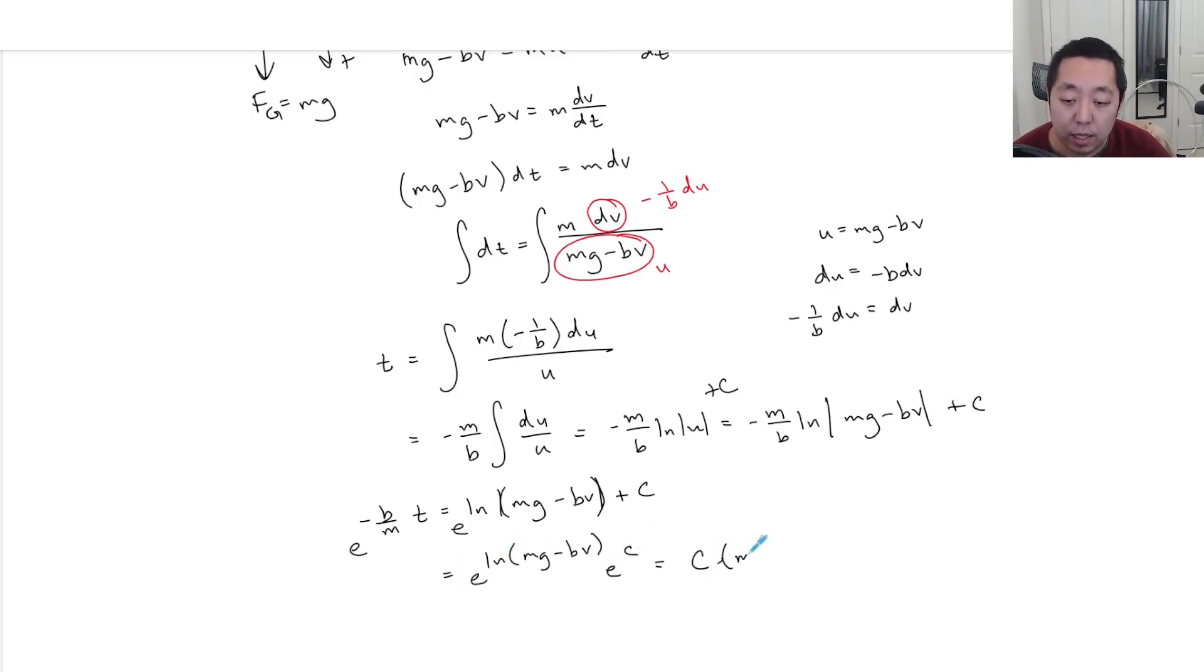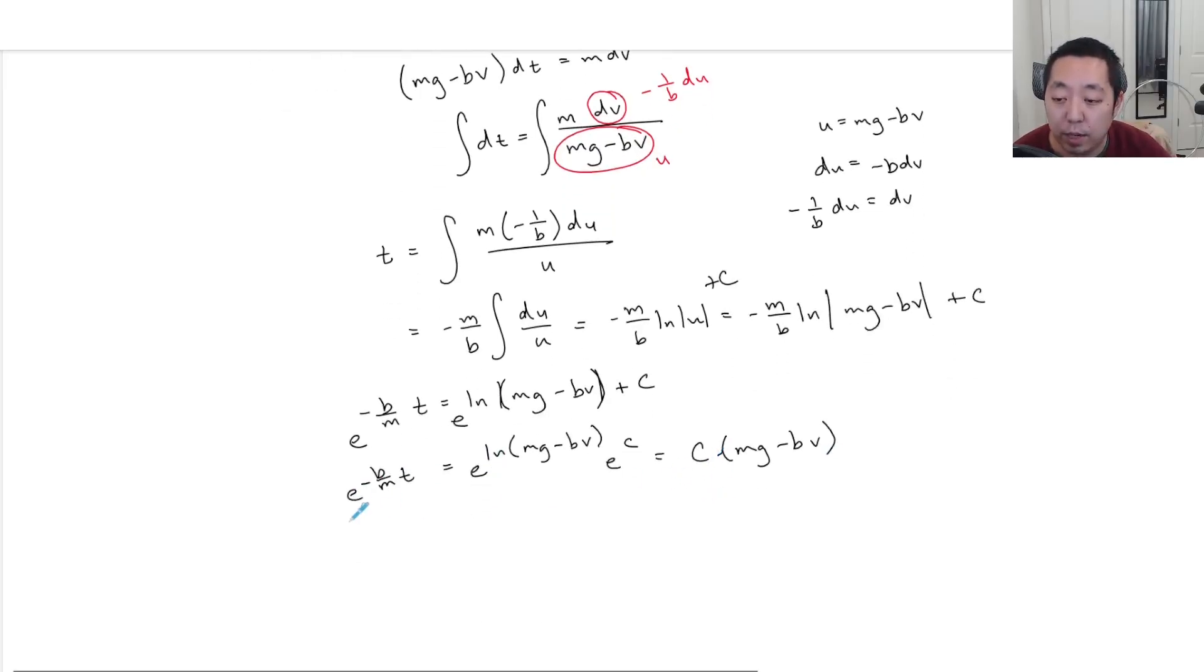And so then you could theoretically try to solve for this. I'm going to multiply by negative B over M on both sides to get rid of that thing in front. Now, I'm assuming that in a physical sense, I can get rid of these absolute values because I'm going to assume that Mg is always bigger than BV. That's not necessarily true. It depends on what the initial velocity is, but we'll just assume that kind of for now. Then in order to get rid of the natural log, I do E to both sides. So the left side becomes that and the right side, this becomes E to the ln Mg minus BV. And then instead of plus C, make it E to the C like that. The E to the C, we collapse into another constant and the E and the ln cancel. So you just get C times Mg minus BV is equal to E to the negative B over M T.